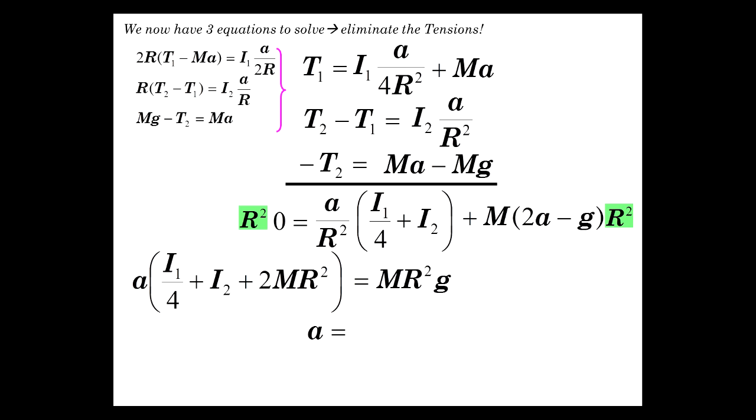And now, what is the acceleration at this stage we're trying to find? M R squared G over I1 over 4 plus I2 plus 2 M R squared. So we have the moments of inertia, 1 and 2. We can still expand. So let's finish the problem.